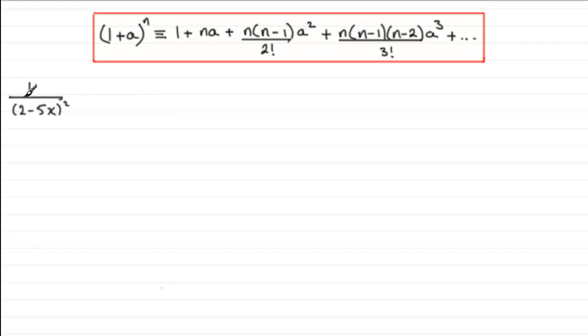So I need to get this into this particular format. First of all, because it's 1 divided by 2 minus 5x squared, I need to bring 2 minus 5x all squared to the top, and so I can rewrite that as 2 minus 5x to the power minus 2.